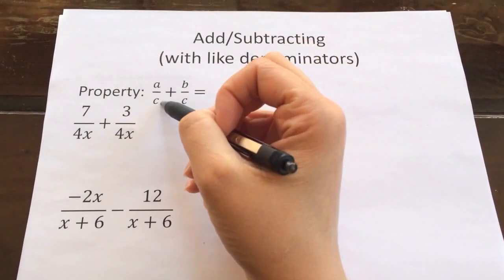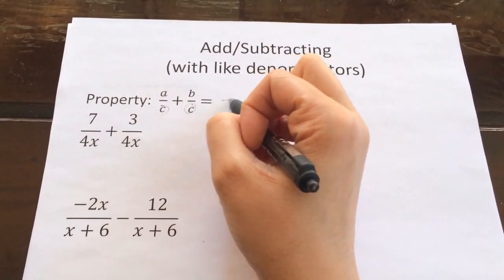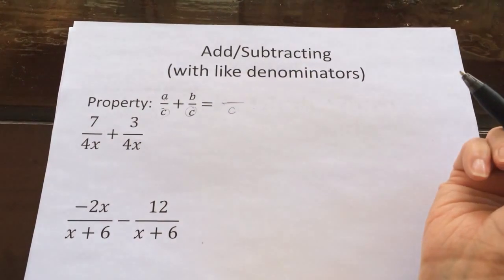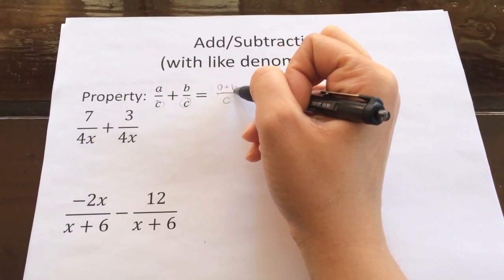So you remember with any fraction, if you're going to add fractions, they have to have the same denominator. We actually will keep that same denominator exactly the same, and then we'll just add the numerators together.